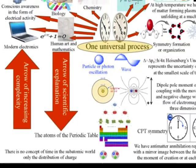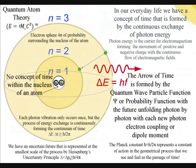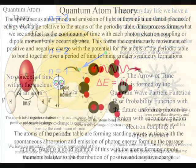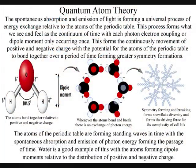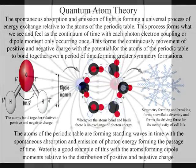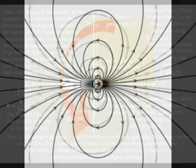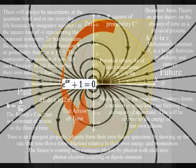This is because the continuum of time is formed by light waves interacting with the electron probability cloud that surrounds the atoms. In this theory, the atoms are standing waves in time, with the future unfolding photon by photon with each new photon-electron coupling or dipole moment.